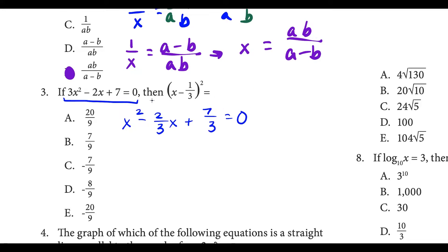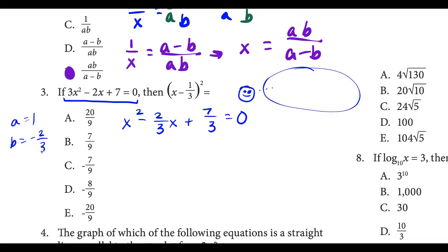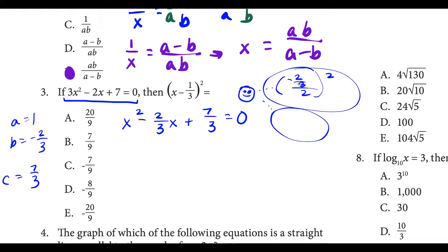The technique for completing the square is that we analyze what's commonly known as the B term. In this case, A equals 1 (the coefficient of x squared), B equals negative two thirds, and C equals seven thirds. We have to take half of the B term — half of negative two thirds — and then square it. Anytime you take half of a fraction, you're just doubling the denominator. So we'd have negative two over six, which reduces to negative one third. Negative one third squared gives positive one over nine.